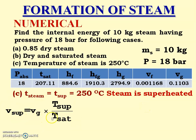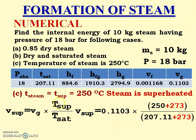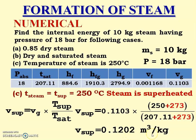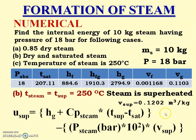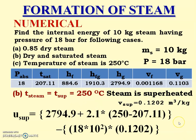v_sup = vg × (T_sup / T_sat), where temperatures must be in Kelvin. Substituting values gives v_sup = 0.1202 m³/kg. We then substitute into the internal energy equation using: hg from steam table, cp of steam = 2.1 kJ/kg·K, T_sup from numerical, T_sat from steam table, pressure from numerical, and the calculated v_sup.